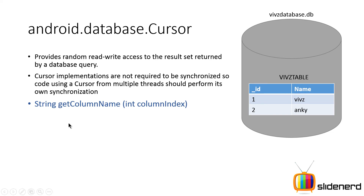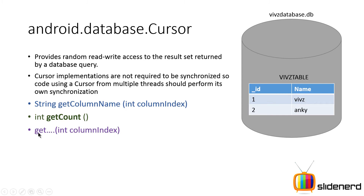Let's take a look at some useful cursor methods. There is getColumnName — if you specify 0 as the int column index, it returns the name of column zero, which is underscore ID. If you pass 1, it returns the name of column one, which is name. Then there is getCount, which tells you how many rows were returned in your result — useful to determine if you got empty results or one, two, or more rows. Then there are the get methods by column index: getString, getInt, getBoolean, and so on. And there is boolean moveToNext, which positions the cursor from the first row to the next and so on.